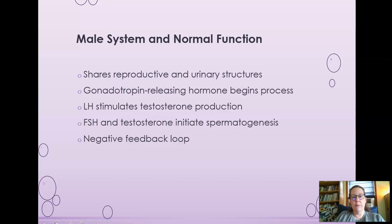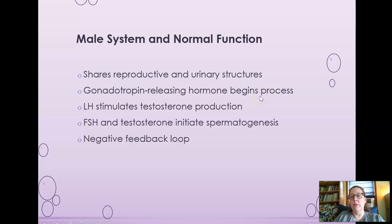Let's talk about the male system — much simpler than the female system. Reproductive and urinary structures are shared and exit out the penis. Gonadotropin-releasing hormone begins the process of maturation into a fully functional male, just like in the female — it begins puberty. They also have LH and FSH. LH, the luteinizing hormone, in the male stimulates testosterone production.